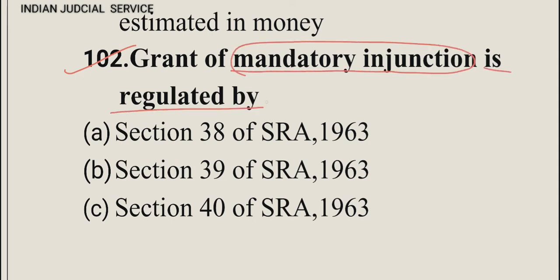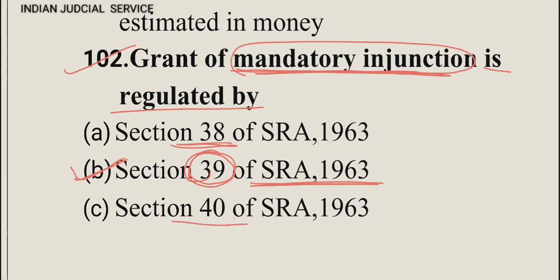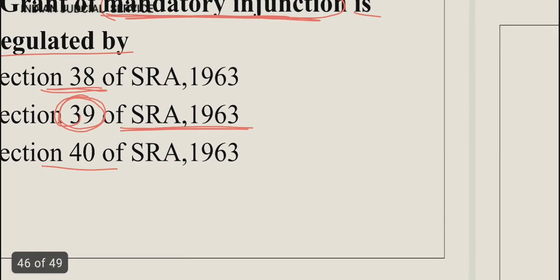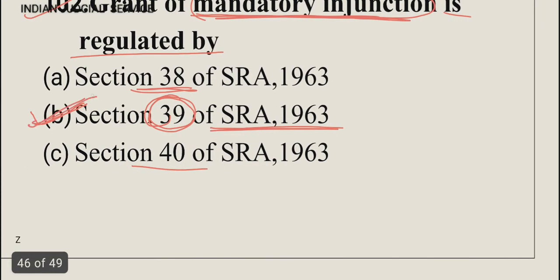Question number 102: The grant of mandatory injunction is regulated by — this is a very important question. It is regulated by section 39 of SRA 1963, so the answer is option B. Note: section 38 relates to when perpetual injunction can be granted, and section 40 relates to damages in lieu of or in addition to injunction.